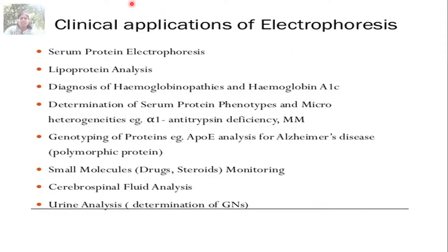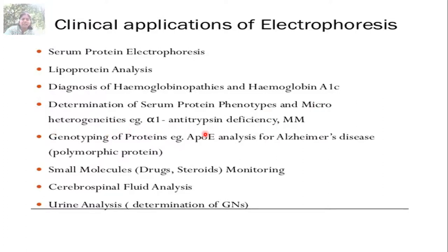What are the applications of electrophoresis? It is applied for study of serum proteins, lipoprotein analysis, and diagnosis of hemoglobin disorders — for example, in thalassemia patients where there is immature formation of globin proteins, which is directly linked with the movement of proteins in electrophoresis. Based on the movement of these proteins, you can determine disorders related to hemoglobin, determination of serum protein phenotypes, micro-heterogeneity such as antitrypsin deficiency, and other genetic disorders caused by mutations affecting amino acid charges and movement.